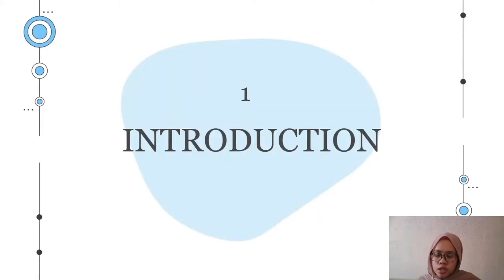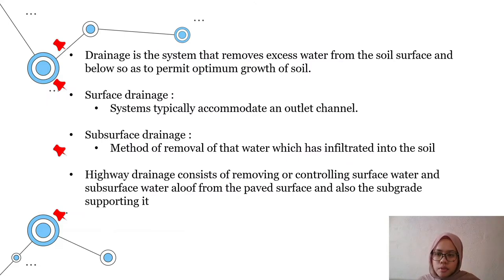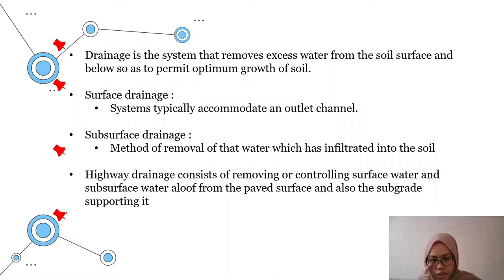For the introduction, drainage is the system that removes excess water from the soil surface and below so as to permit optimum growth of soil. There are two types of drainage. The first one is surface drainage, which is the system typically accommodated through channels. The second one is subsurface drainage, which is the method of removal of water which has infiltrated into the soil. Highway drainage consists of removing or controlling surface water and subsurface water away from the path surface and the sub-grade supporting it.